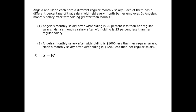For Maria, we have the same thing, but as far as we know all the variables are different, so we might write Maria's equation as E2 equals S2 minus W2. Given that, let's go on to the data statements, evaluating them separately first, as always.